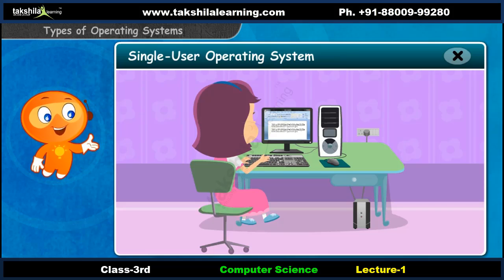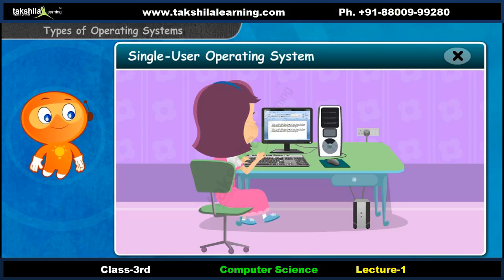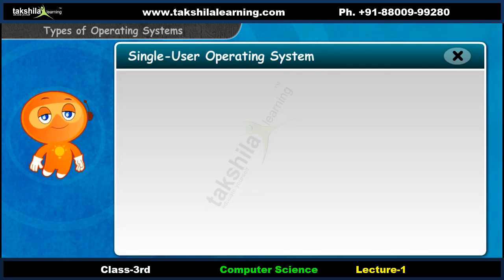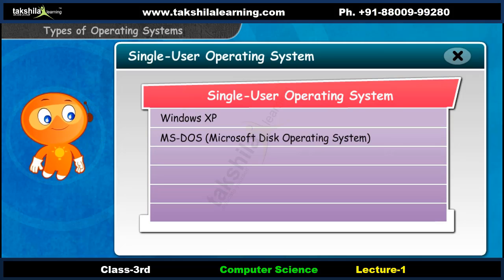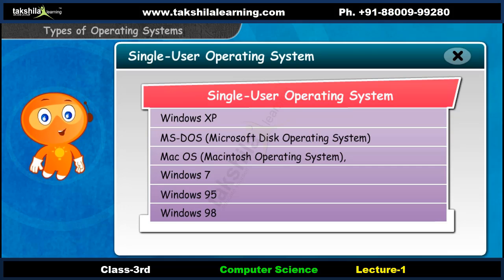A single user operating system allows only one person to work on it at a time, like the operating system we are using. Few of the single user operating systems are Windows XP, Microsoft disk operating system, Macintosh operating system, Windows 7, Windows 95 and 98.